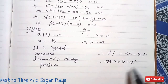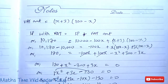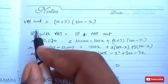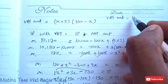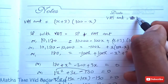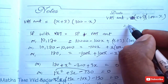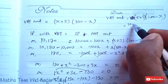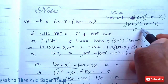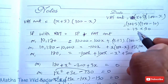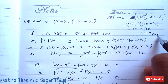Our VAT percent is X plus 3 percent, which is 10 plus 3 equals 13 percent. Now we can find the VAT amount by putting X equals 10: VAT amount equals (X+3)(100 minus X) equals 13 times 90. Multiplying: 13 times 90 equals 1170. So the required VAT amount is Rs 1170.